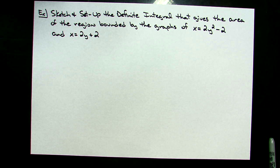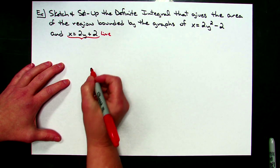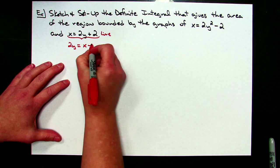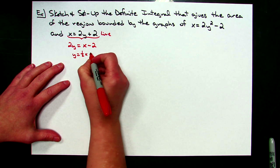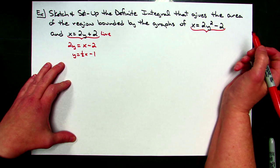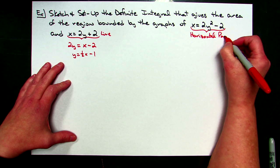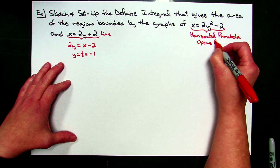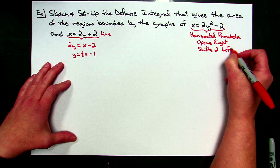Let's analyze those curves. x equals 2y plus 2 is a line. To sketch it easily I'll solve for y: 2y equals x minus 2, so y equals one-half x minus one. It clearly goes through negative one with a slope of one half. And x equals 2y squared minus 2 — hopefully you recognize that as a horizontal parabola. It's going to open to the right, and that minus two shifts it to the left.